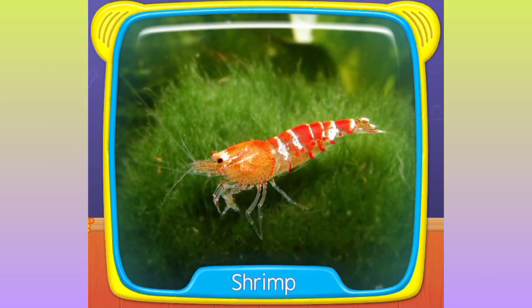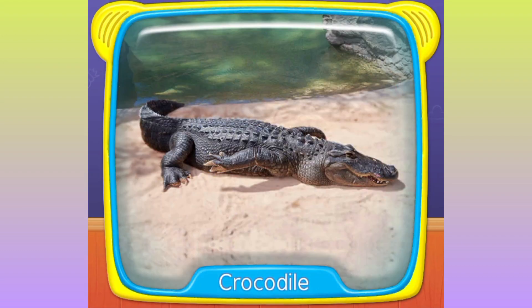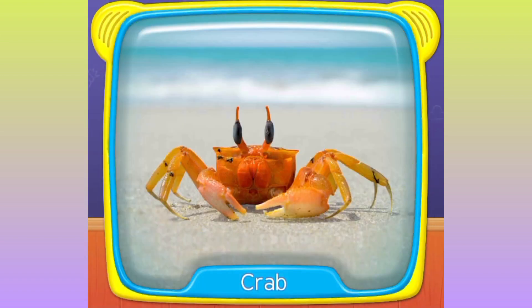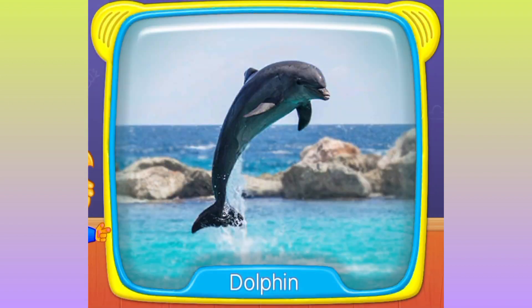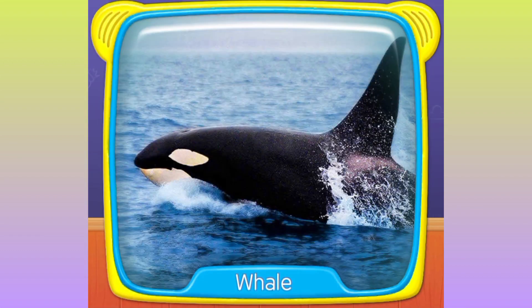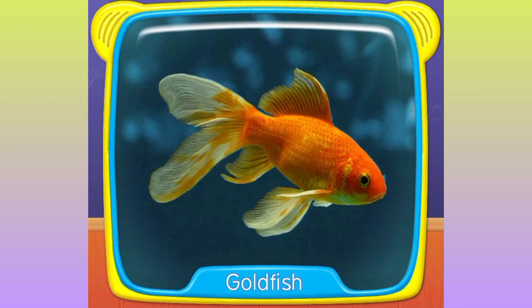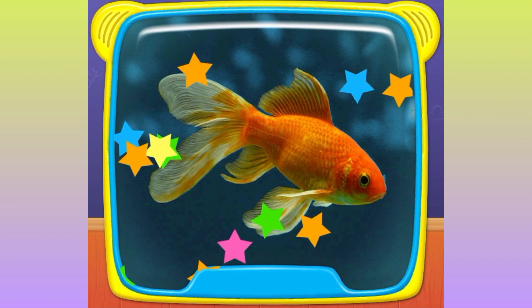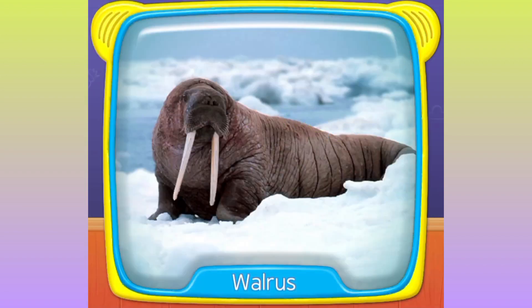What is this? Shrimp. Crocodile. Crab. What is this? Dolphin. Whale. Goldfish, Whitefish. Walrus.